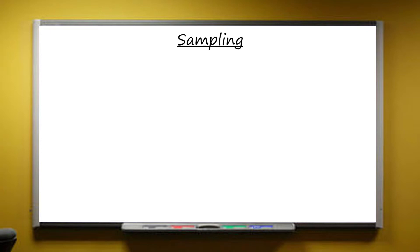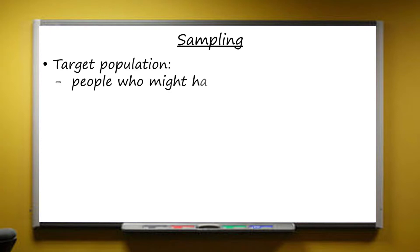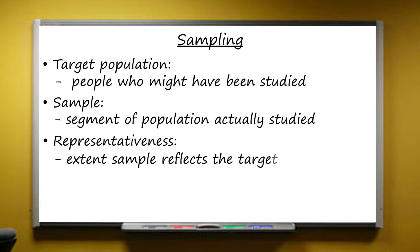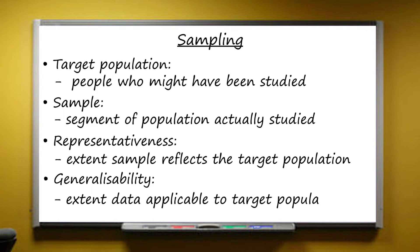We'll be revising some of the ways sampling is done and how we can evaluate the methods. But first, make sure you're not going to get tripped up by any of the technical terms that examiners expect you to know and are often used in exam questions. So the target population is all the people who might have been studied. The sample is the segment of that population who were actually studied. Representativeness is about the extent to which the sample reflects the target population. And generalizability is about the extent to which the data from the sample can be applied to the target population. So the more representative the sample, the more researchers feel they can generalize.